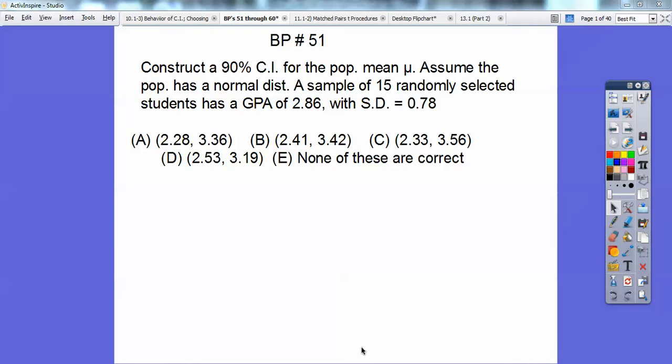Hey everybody, this is going to be some more multiple choice for your AP stat test coming up. So construct a 90% confidence interval for the population mean mu. Assuming that the population has normal distribution and the sample of 15 randomly selected students has a GPA of 2.86 with standard deviation of 0.78. We're going to construct a 90% confidence interval. So this is my mean. Remember, here's your confidence interval formula right here.